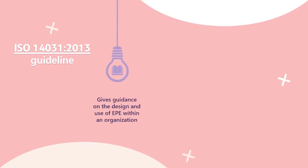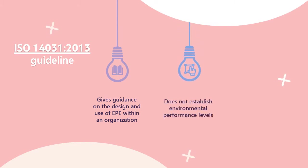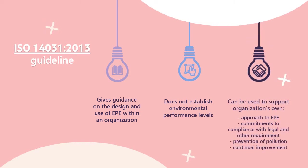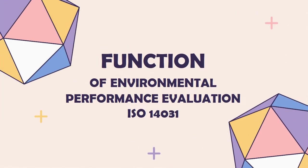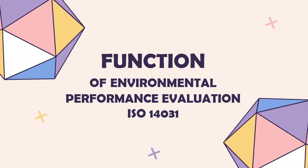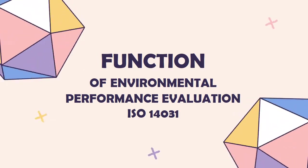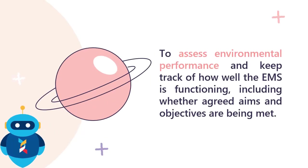Scope of Environmental Performance Evaluation: ISO 14031:2013 is the guideline for environmental performance evaluation that gives guidance on the design and use of EPE within an organization. It does not establish environmental performance levels and can be used to support an organization's own approach to EPE, commitments to compliance with legal and other requirements, and more.